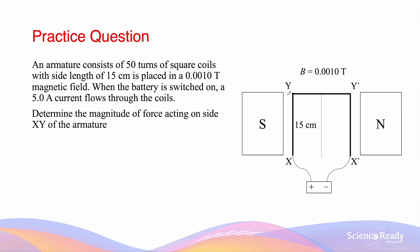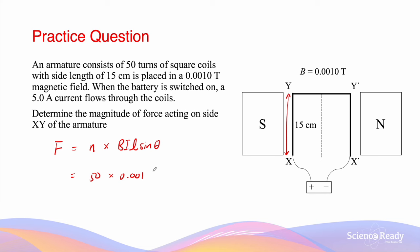Side XY has a length of 15 centimetres as labelled. The total force acting on the armature equals the number of turns multiplied by the force acting on a single turn of coil. So N is 50 and B is 0.001 Teslas.